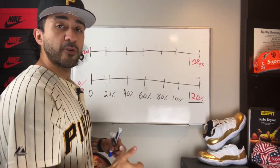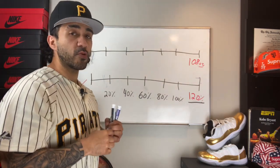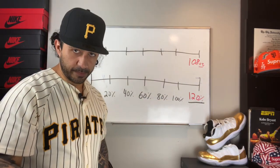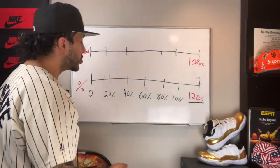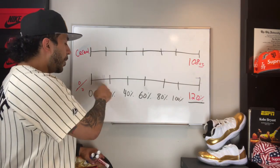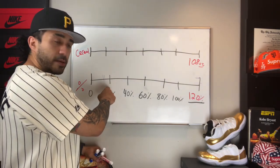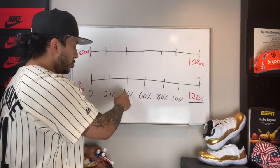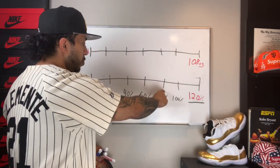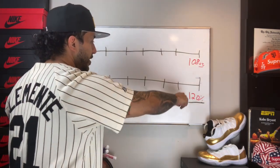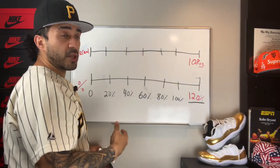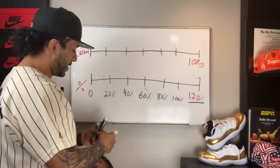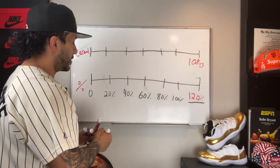Well, I know the increase is 20%. They're asking me the original amount, and an original amount is always 100%. The way I would suggest doing this is asking ourselves, how many notches do we have here? We have 6 notches of 20%. So I'm going to divide 108 by six. If I divide 108 by six, that gives me 18.